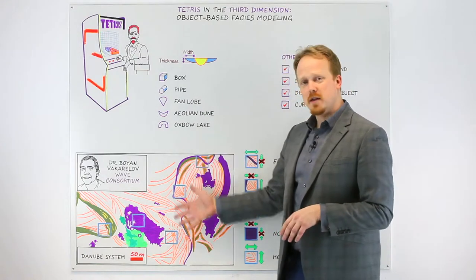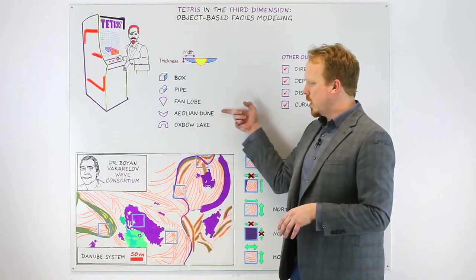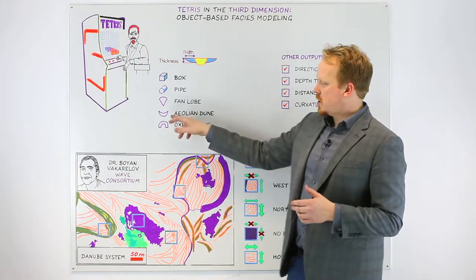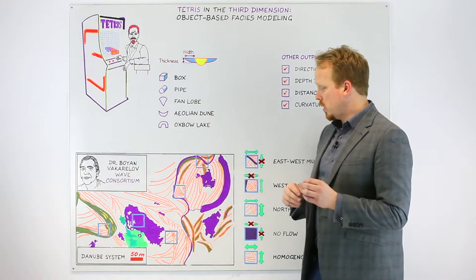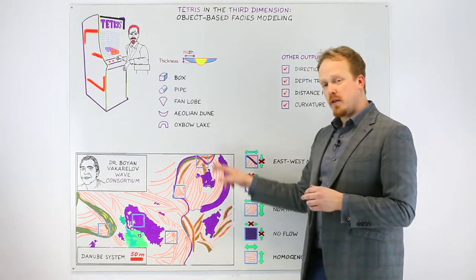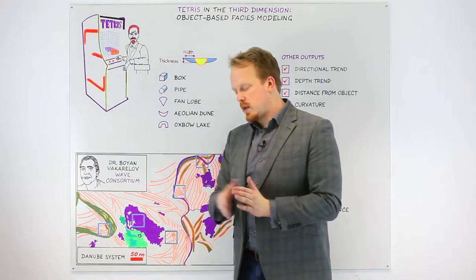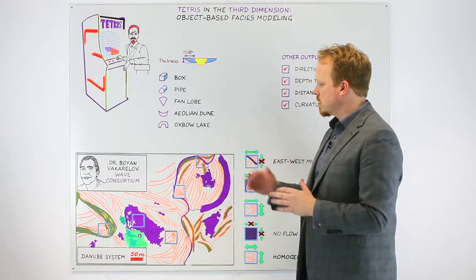In fact, what I usually see in these kinds of systems are things that look more like an aeolian dune or an oxbow lake. And so my recommendation, I usually am using things like the aeolian dunes, one after the other, to represent the development of those point bars that come across these systems.